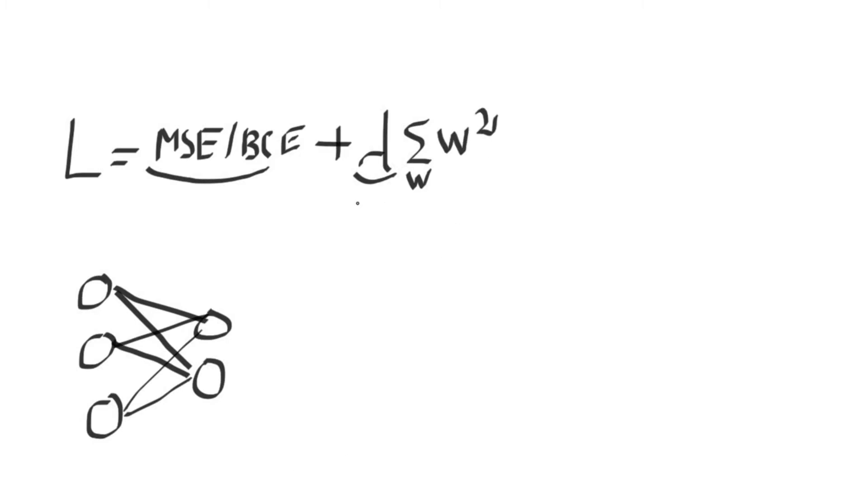Now let's briefly explain what each term in the regularization part of the loss function means. We have the hyperparameter lambda, which controls how much importance we give to the regularization term here, the sum of our weights. This sum can be expanded as w1 squared plus w2 squared plus dot dot dot.